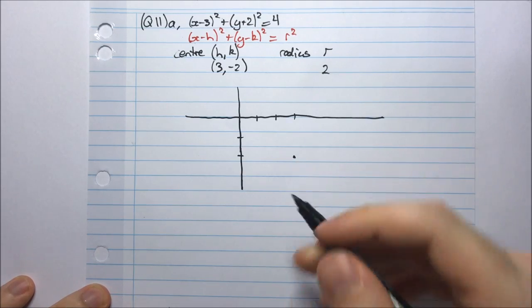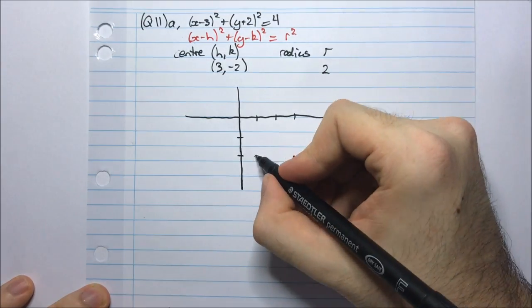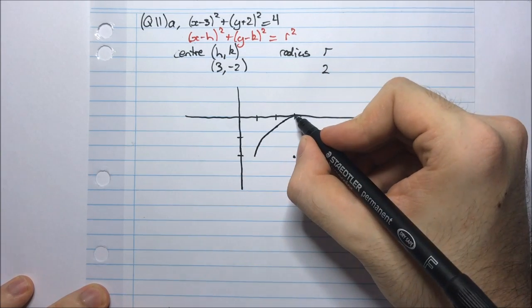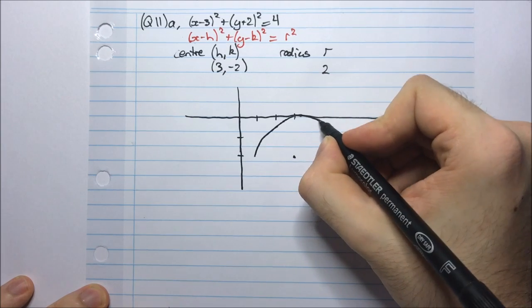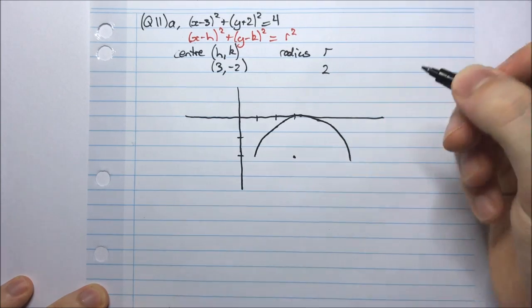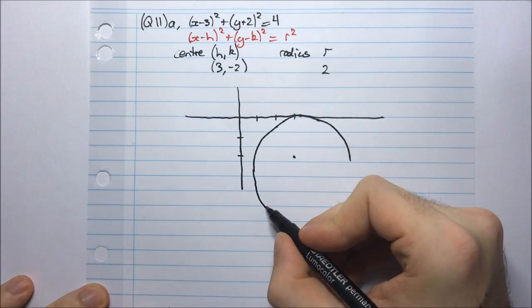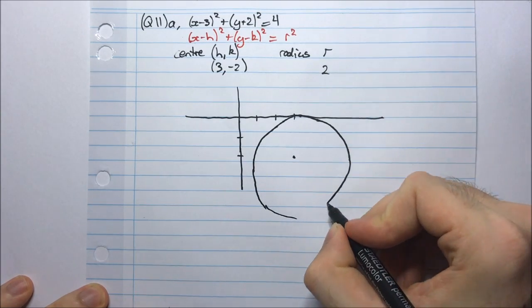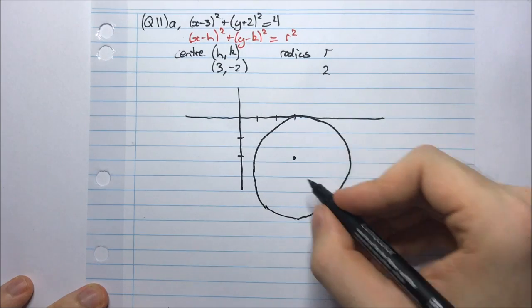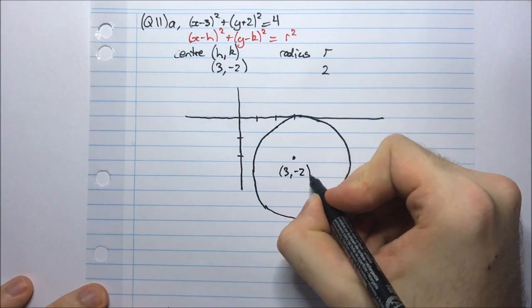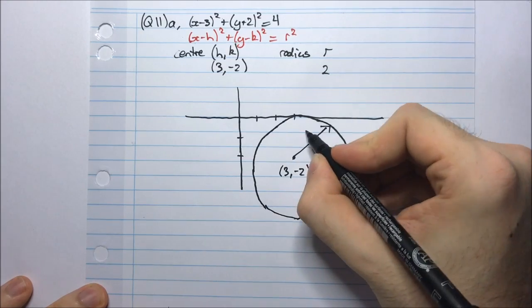That's our center, pardon me, and we're going in a radius of 2 units. So we're going to touch the x-axis here, go around to about 5 units and then go down 2 units. Something like this, although this is very poorly drawn.